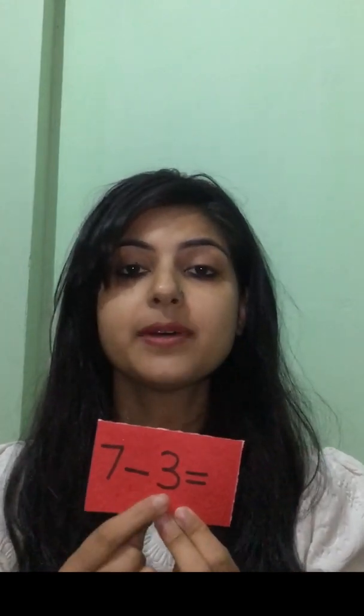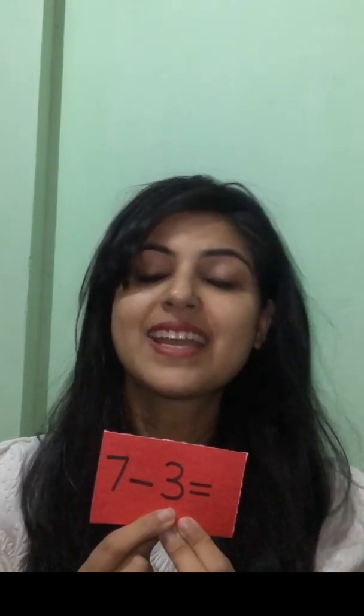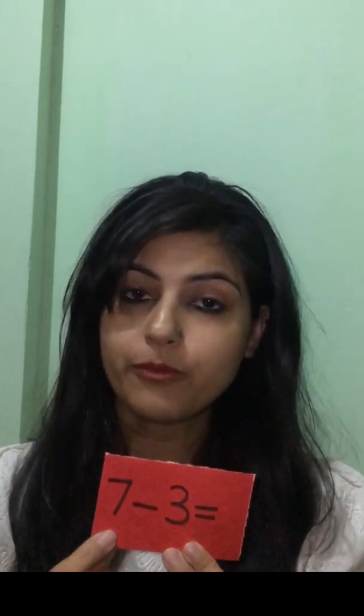Now let's just see the example. Here I have 7 minus 3 is equal to. Now tell me — which is the bigger number here? Is 7 a bigger number or 3 a bigger number? Correct — 7 is a bigger number. So we will keep the bigger number in our mind, and 3, which is the smaller number, on our fingers. So 7 in our mind and 3 on our fingers.